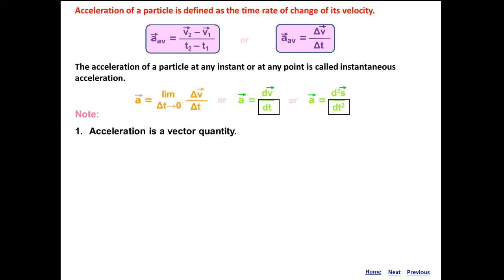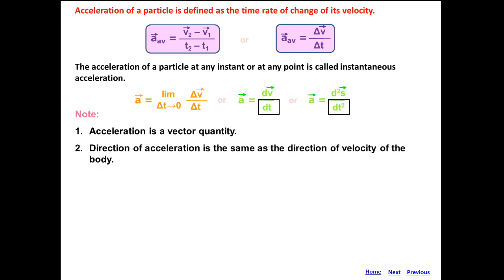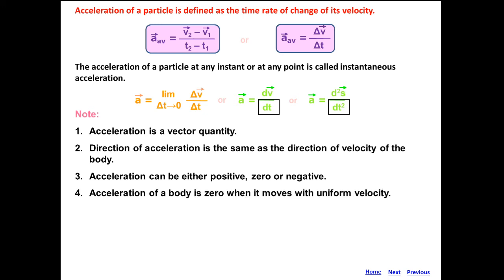There are certain points to note. Acceleration is a vector quantity. The direction of velocity is along the tangent at that point, and the direction of acceleration is the same as the direction of velocity. As discussed earlier, velocity can be positive, zero, or negative — because displacement can be positive, zero, or negative — so acceleration can also be positive, zero, or negative. If a body is moving with uniform velocity, meaning velocity is not changing in direction or magnitude, then acceleration is zero.